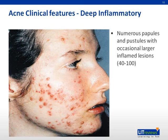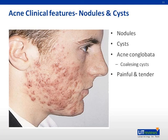Deep inflammatory acne consists of not only pustules and papules, but also larger nodular lesions. Nodular cystic acne has a combination of comedones, nodules, but also cysts and coalescing cysts called acne conglobata. These lesions are usually painful and tender.